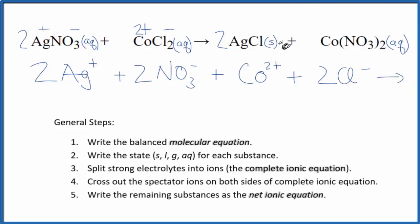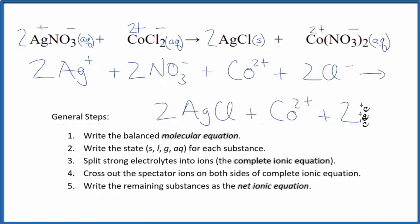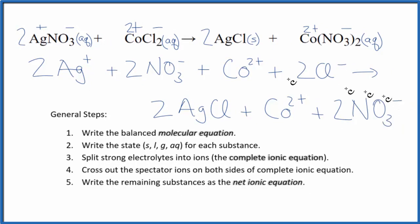For the products, we said we don't split solids apart in net ionic equations. So we'll have two AgCl, and that'll stay together, plus, we said we had a 2 plus and a minus here, 1 minus for the nitrate. We would have Co2+, plus two nitrate ions. And these would be the products.